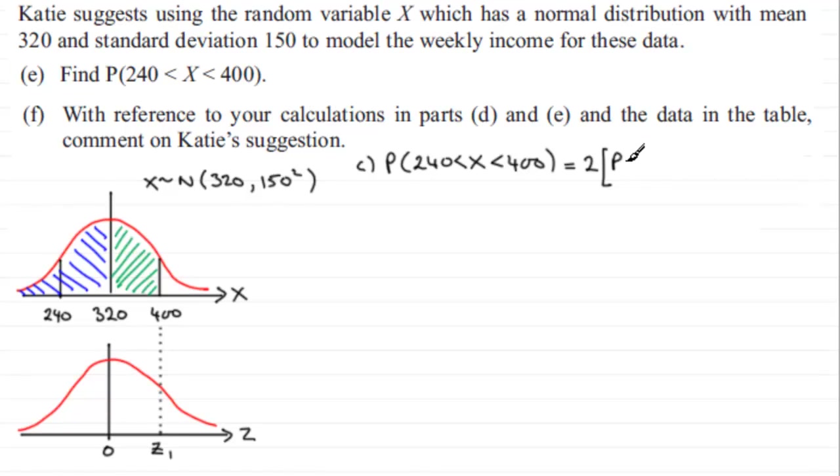We're going to work out the z1 value. It's going to be the observed value, which is 400, minus the mean 320, divided by the standard deviation which was 150.